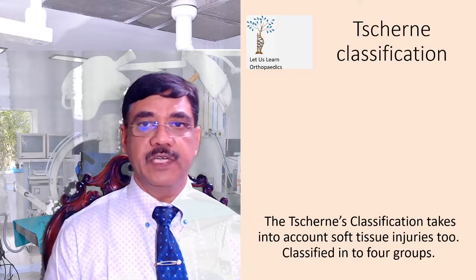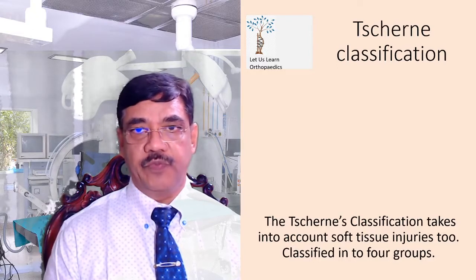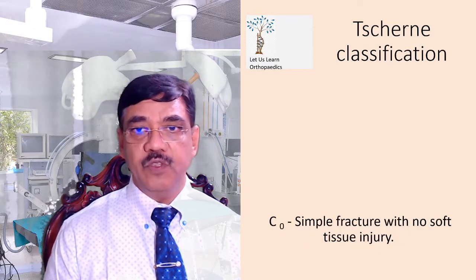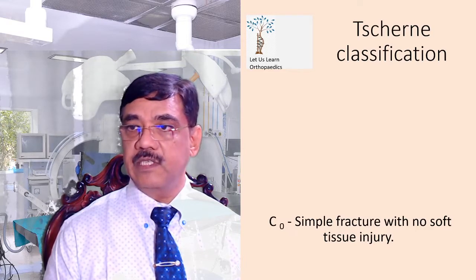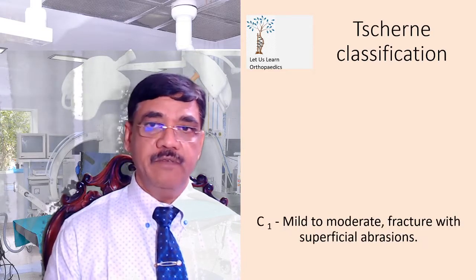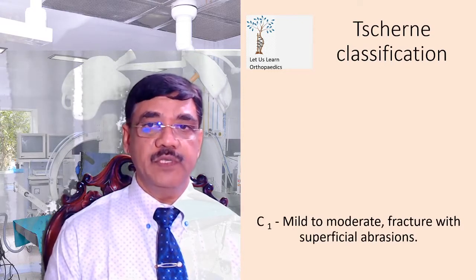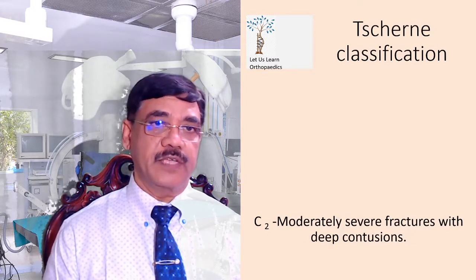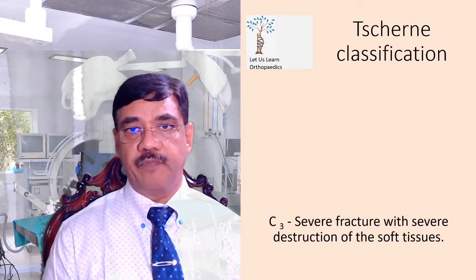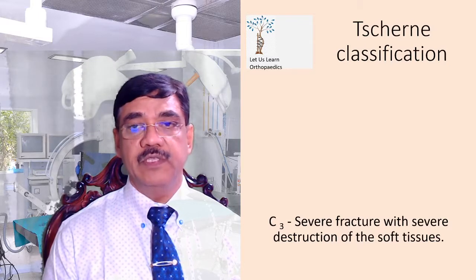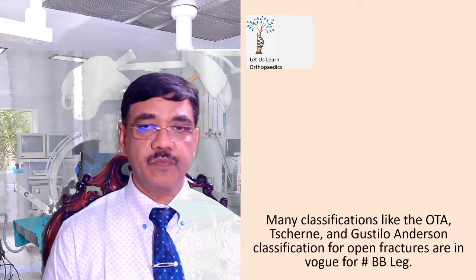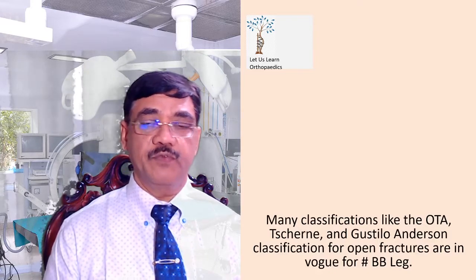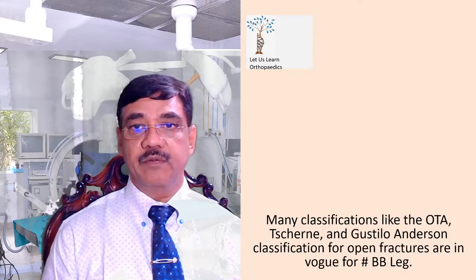The Sureness classification takes into account the soft tissue injuries too, and is classified into four groups: C0 is a simple fracture with no soft tissue injuries; C1 has mild to moderate fractures with superficial abrasions only; C2 has moderately severe fractures with deep contusions; and C3 has severe fractures with severe destruction of the soft tissues. Many other classifications like OTA, Charney, and Castillo-Underlande classification for open fractures also exist.